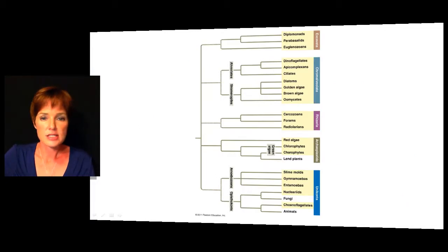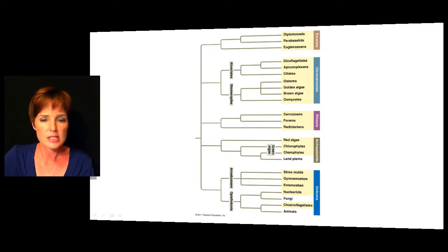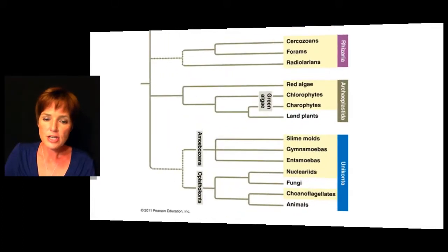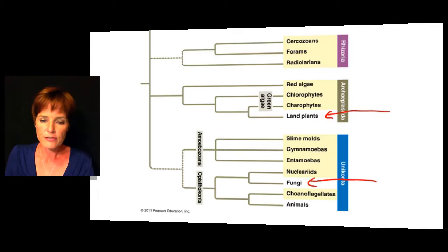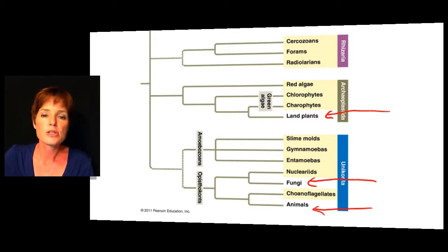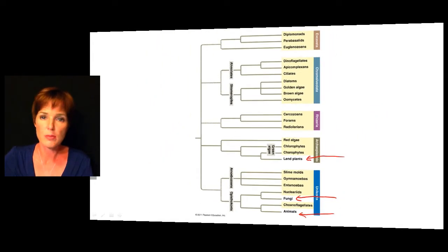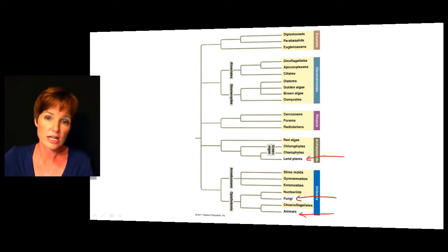Here's a look at the categories of protists we'll be discussing in this chapter. There are quite a lot of them on this slide. Also notice that land plants, fungi, and animals are in this same table, so you can see that protists are really dispersed among the other groups of organisms that we have quite well classified.